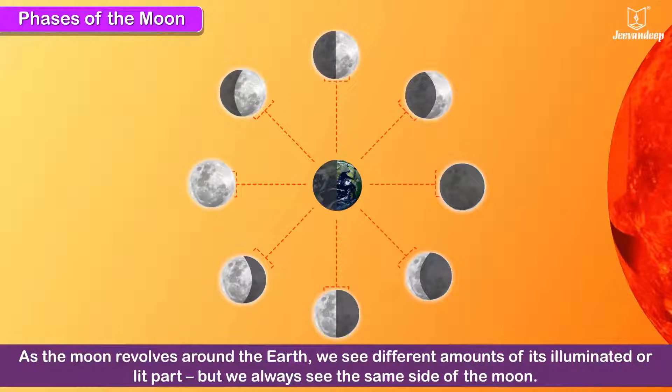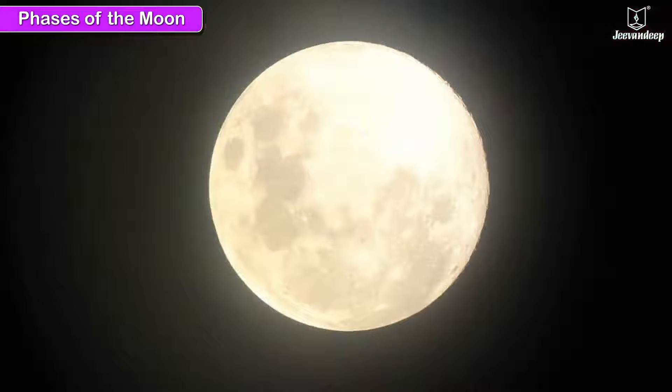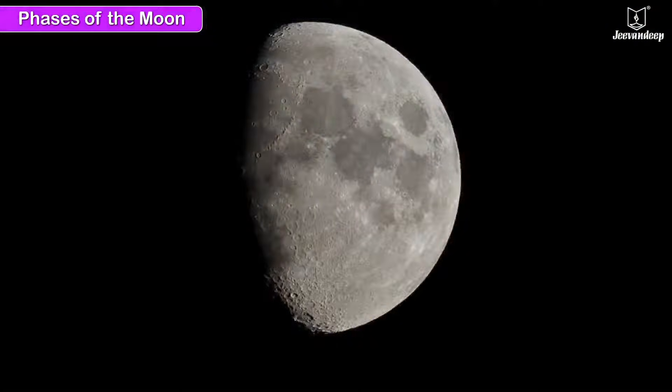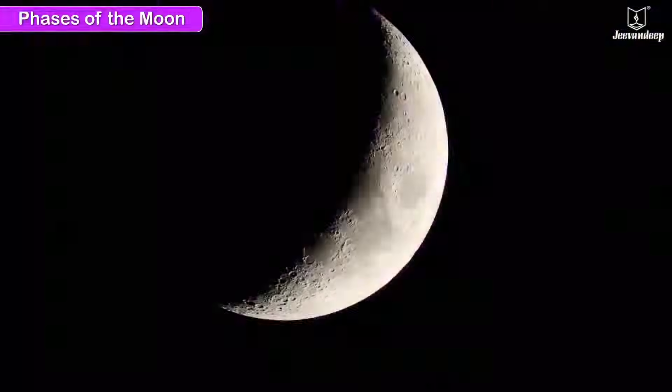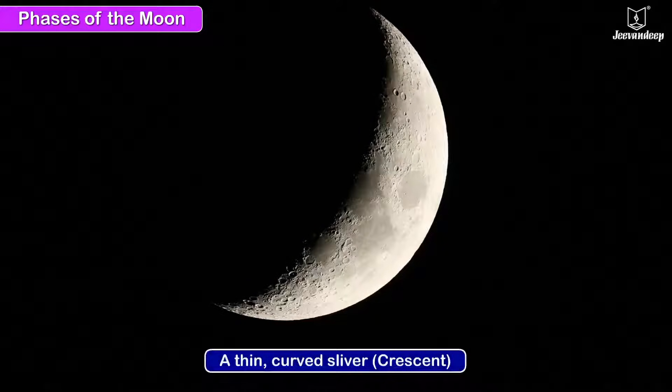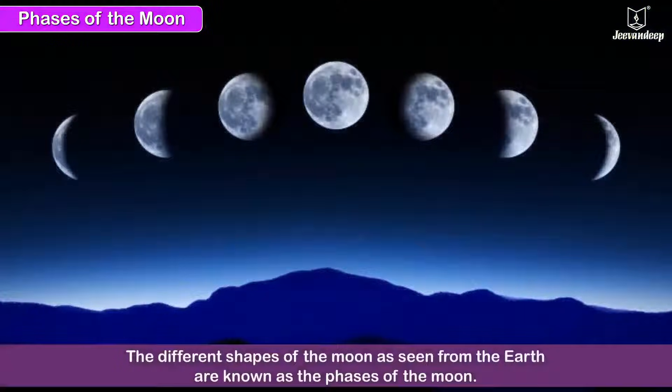As the Moon revolves around the Earth, we see different amounts of its illuminated or lit part, but we always see the same side of the Moon. Sometimes it looks like a circle, full moon. Sometimes more than half a circle, gibbous, and sometimes a thin curved sliver, crescent. The different shapes of the Moon as seen from the Earth are known as the phases of the Moon.